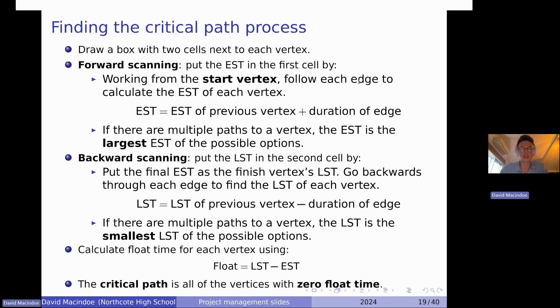And then the first thing we have to do is what's called forward scanning. What that is doing is we're putting in these earliest start times, these ESTs. At the start vertex, the earliest that the start could start is at time zero. So we just put zero in the first box on the left. And then as we go through each edge, each activity, we're just adding on the duration of that edge to the previous vertex's earliest start time. Now, if there are multiple paths to a vertex, the earliest start time is the largest of those possible options. If you've got two different paths coming together, just always use the largest one.